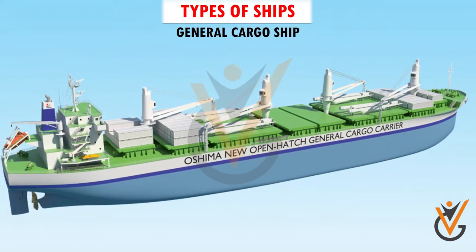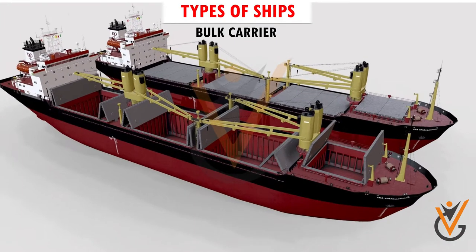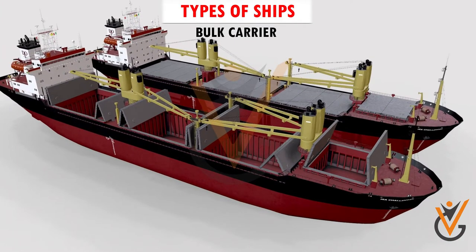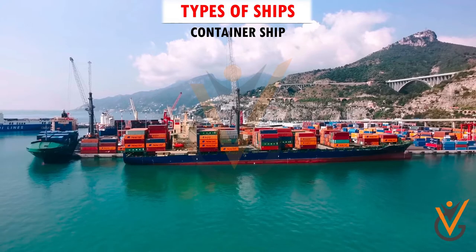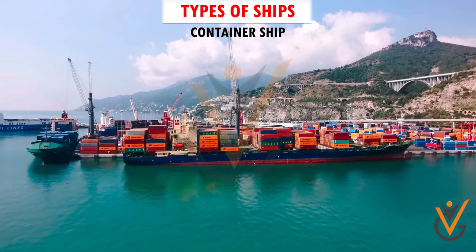Several other factors made ships more and more specialized, giving rise to different categories. A bulk carrier is a merchant ship used to transport unpackaged bulk cargo such as grain, coal, cement, fertilizer, and other similar cargos.